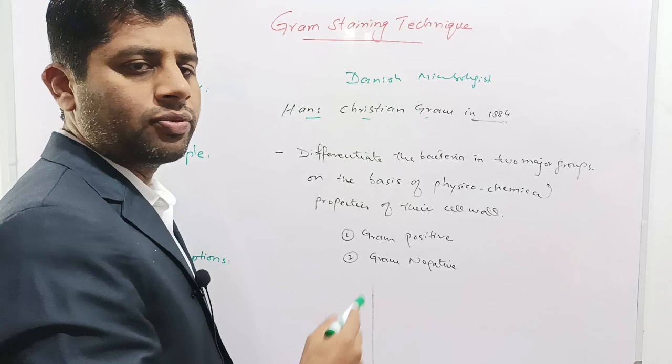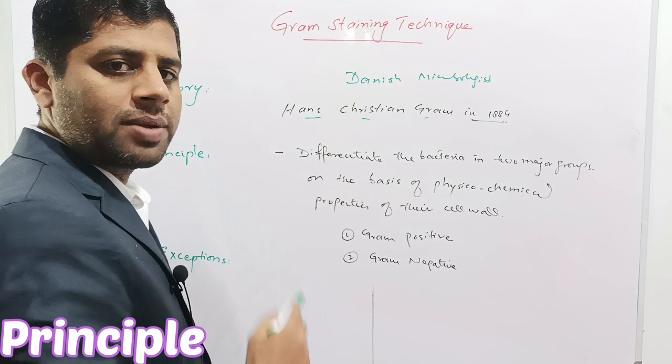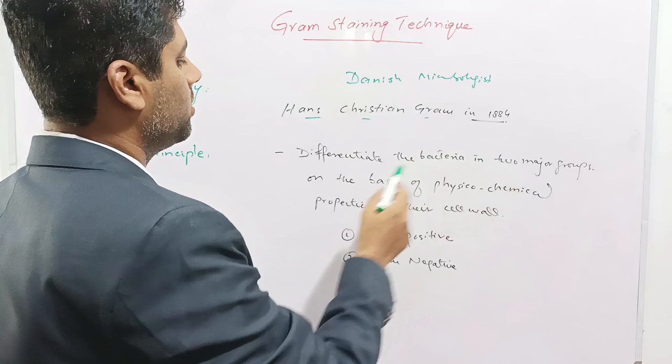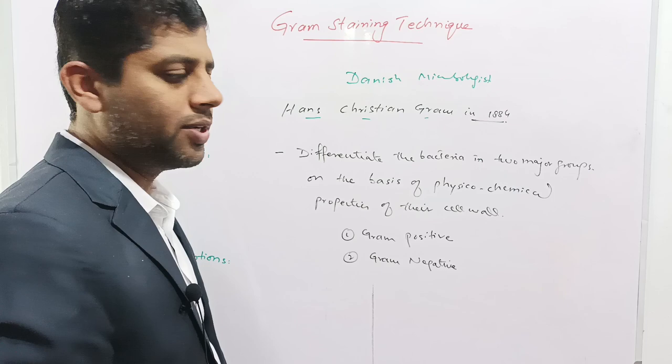The name of Gram staining comes from the developer of the stain, Hans Christian Gram. The principle of Gram staining is very simple. It basically differentiates the bacteria into two major groups on the basis of physico-chemical properties of their cell wall. All bacteria in the world can be classified into two major groups: the Gram positive and the Gram negative bacteria.